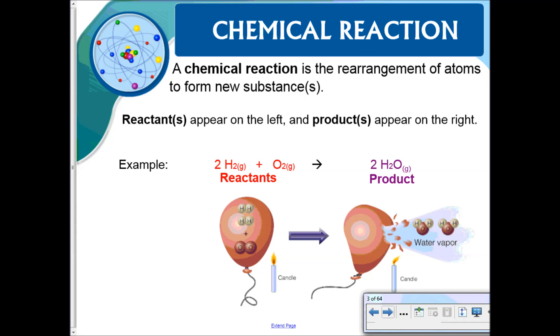A chemical reaction is rearrangement of atoms to form new substances. For a chemical equation we have the reactants. The reactants appear to the left of the arrow. We call that a yield sign and then you get the products. When we look at this chemical reaction we'll notice that it has this little G here that indicates that hydrogen is in the physical state of gas. Oxygen is a gas and the product water is in a gaseous state as well.